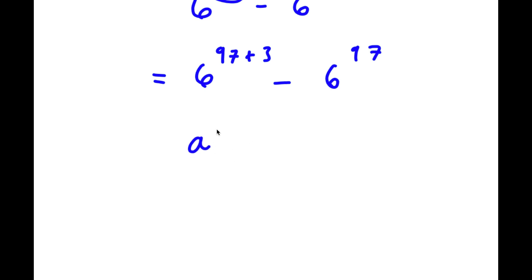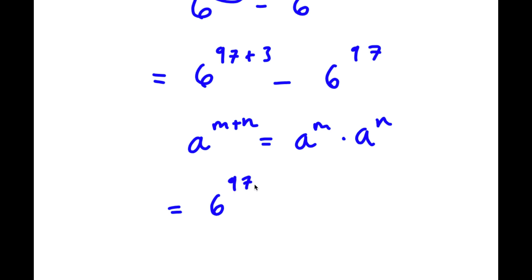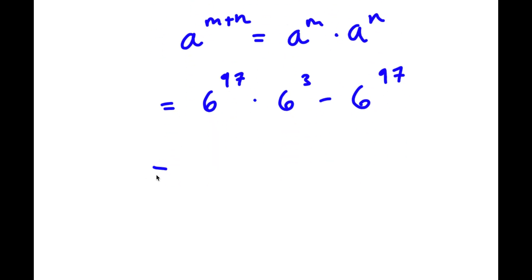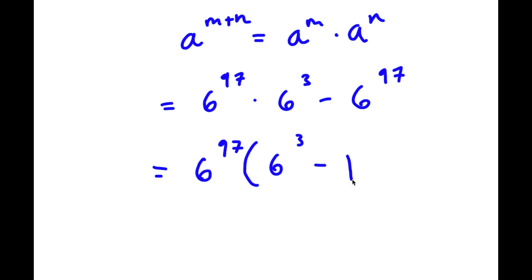Now, using the rule a to the power of m plus n equals a to the power of m times a to the power of n, I can rewrite 6 to the power of 97 plus 3 as 6 to the power of 97 times 6 to the power of 3, minus 6 to the power of 97. Factoring out 6 to the power of 97 gives 6 to the power of 97 times the quantity 6 to the power of 3 minus 1.